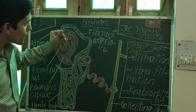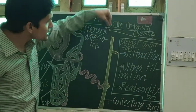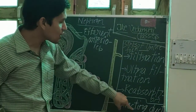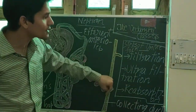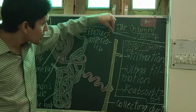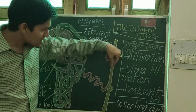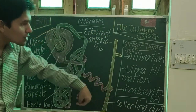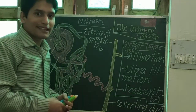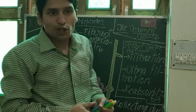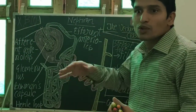From the blood, blood is filtered and urine is collected in this duct, that is called the collecting duct. In the collecting duct, urine is collected.